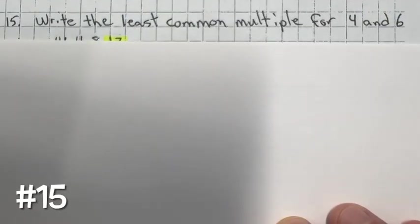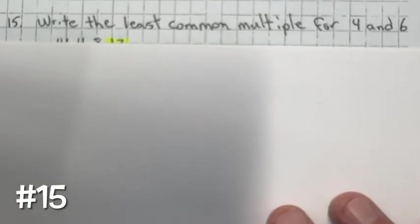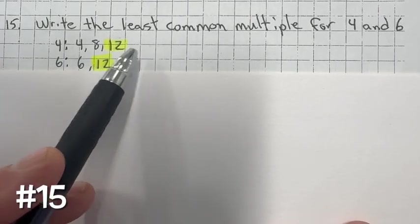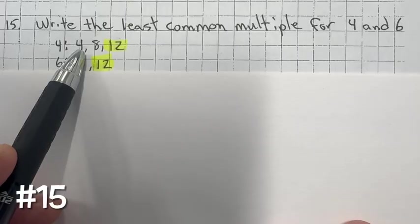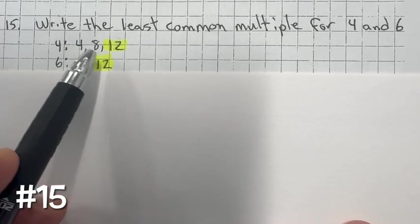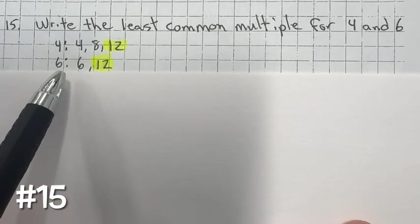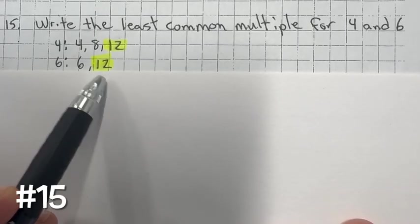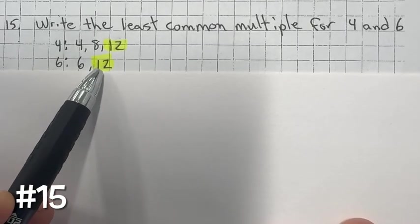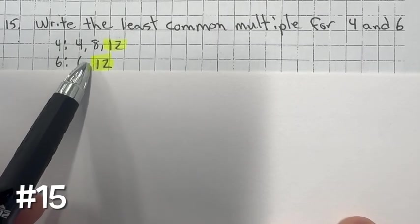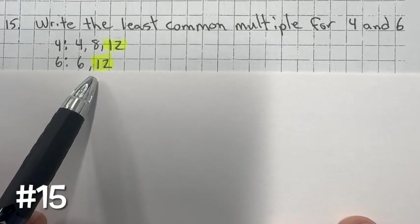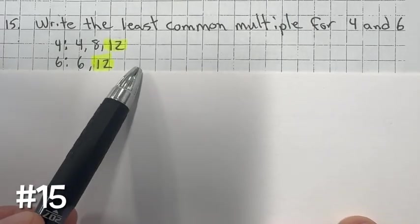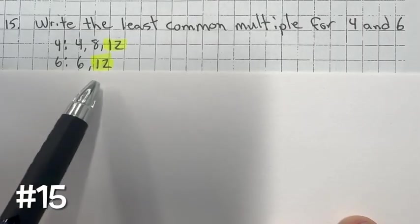Number 15: write the least common multiple for four and six. Multiples of four are four, eight, twelve, sixteen. Multiples of six are six, twelve. We can stop there because twelve is the first multiple that four and six have in common. So twelve is the least common multiple. Twenty-four would also be a common multiple, but it's not the least.